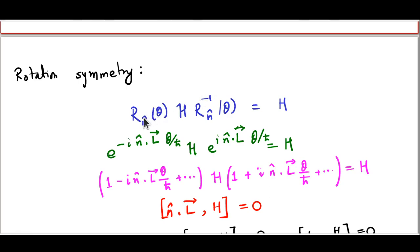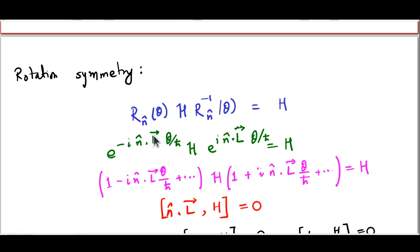Rotation symmetry plays a big role in the theory of such Hamiltonians. To remind you of rotation symmetry: if you take the unitary operator which rotates through an angle theta about the axis n-hat, then the Hamiltonian changes under such a rotation to R(n-hat, theta) H R(n-hat, theta) inverse — the standard similarity transformation. But because we have a rotationally symmetric Hamiltonian, this result must be the same as H itself. We make use of the fact that R(n-hat, theta) is an exponential of minus i n-hat·L theta by h-cross, where L is the vector angular momentum operator with components Lx, Ly, Lz.